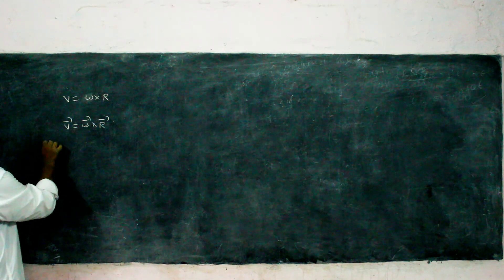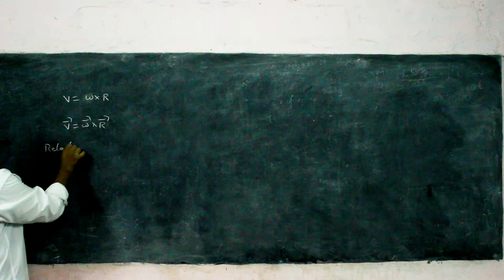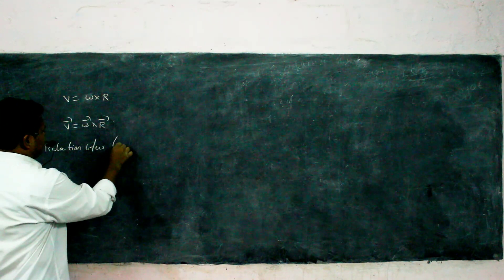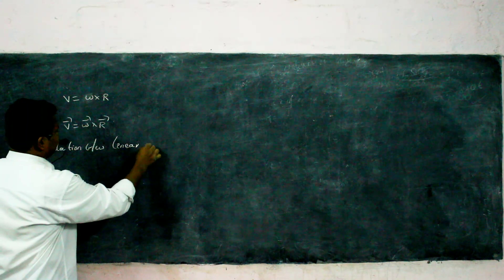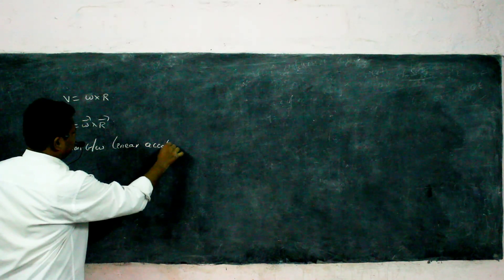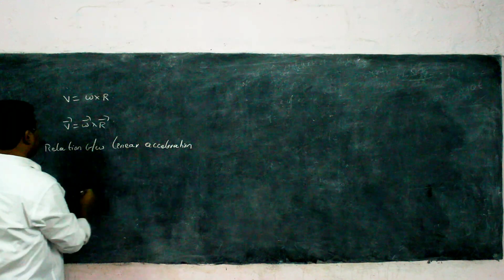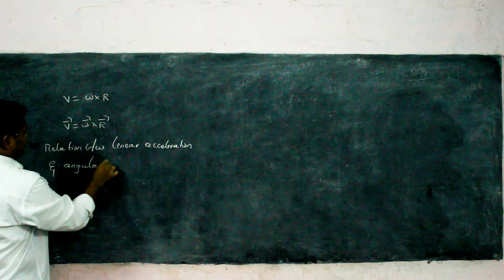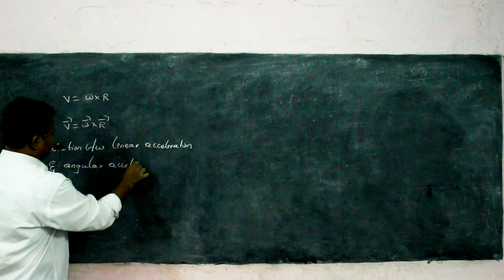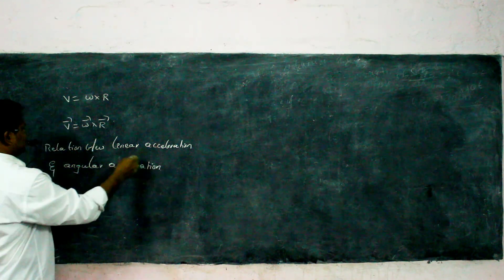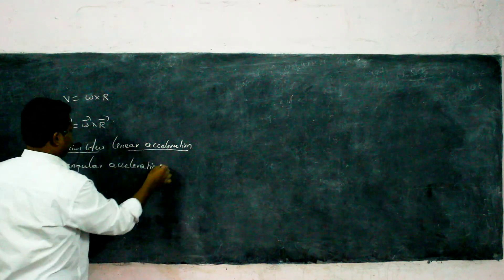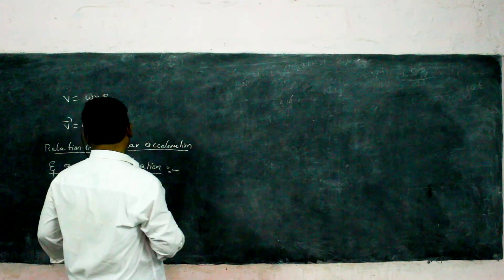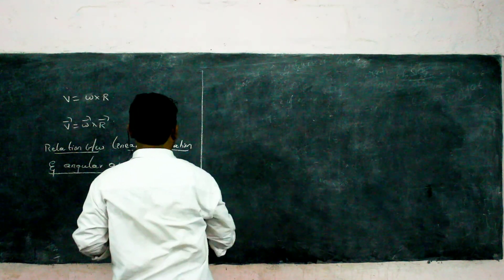Now we will write a relation between linear acceleration and angular acceleration. We will simply differentiate the velocity relation V = ωR to get the required relation.